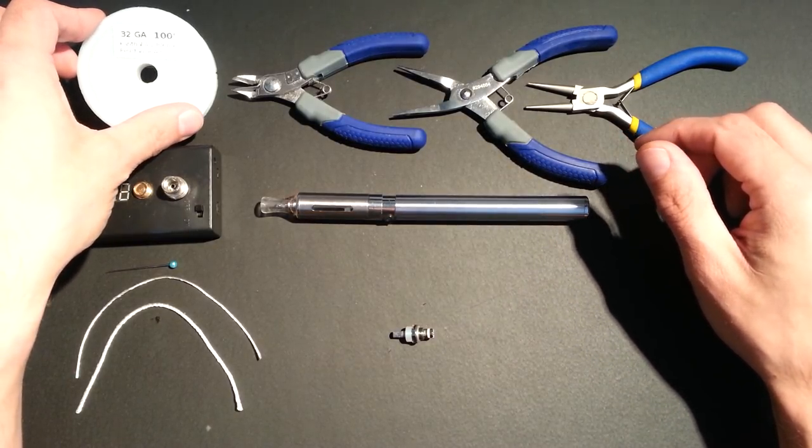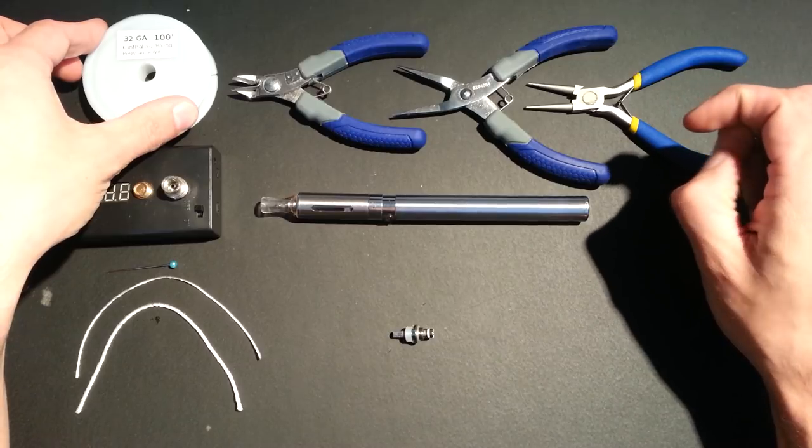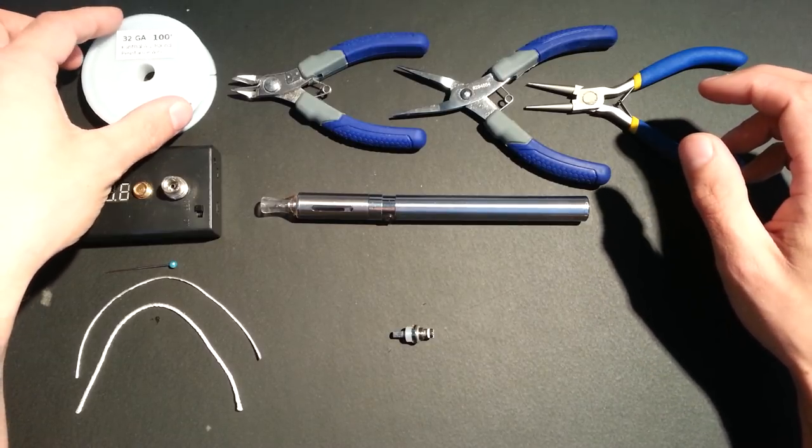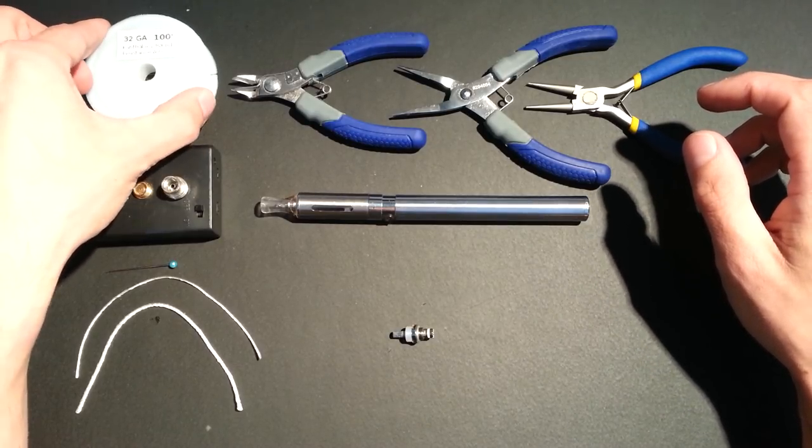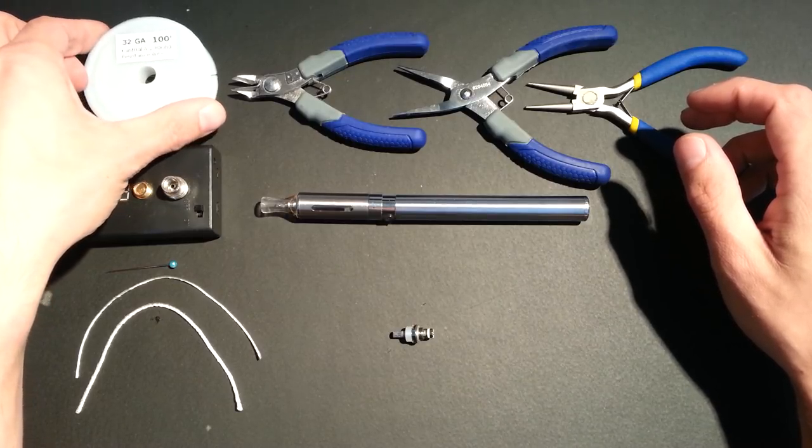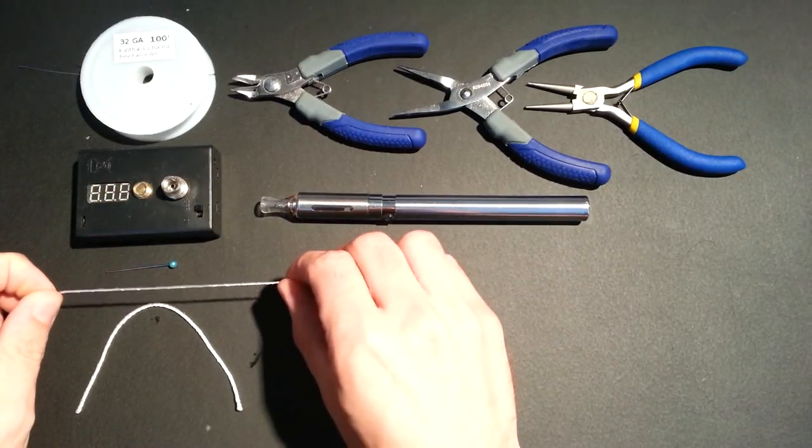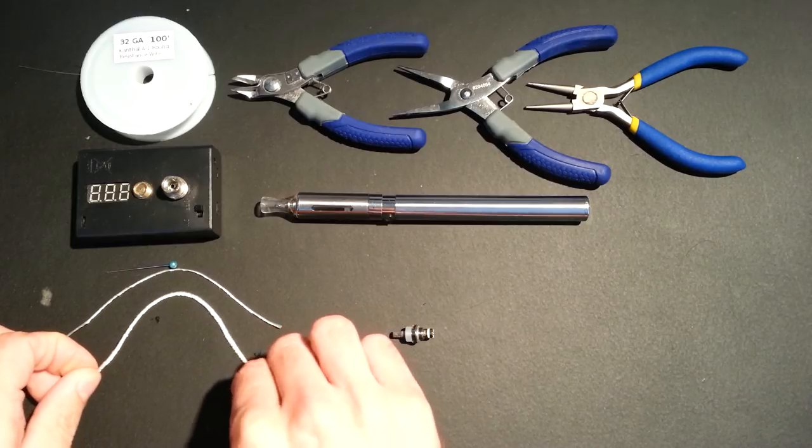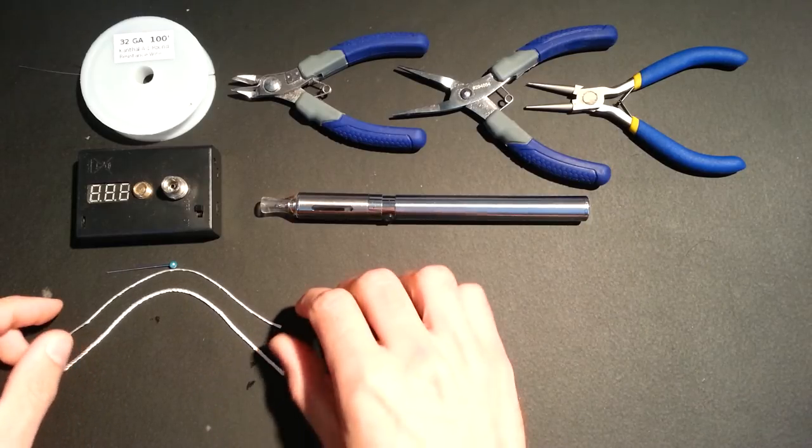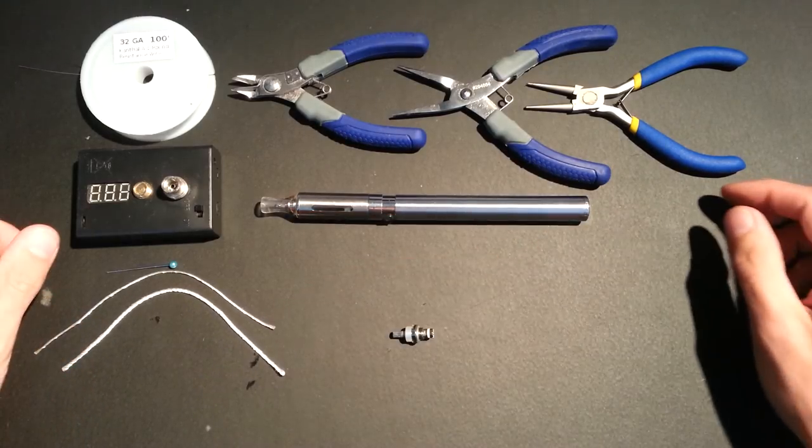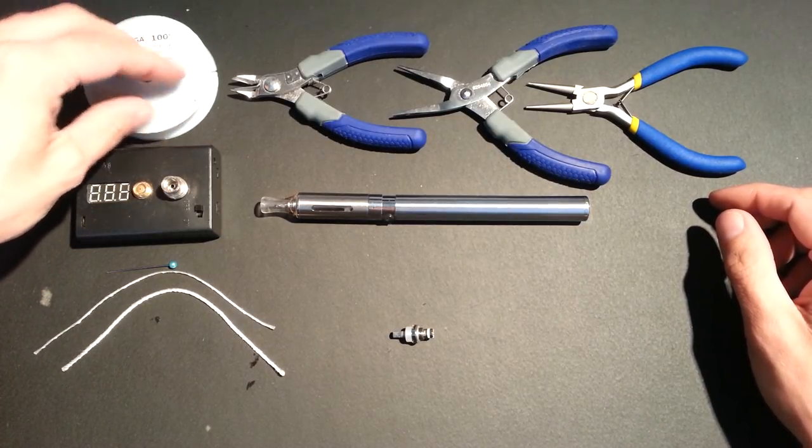Today I'm going to be using some 32-gauge Kanthal A1 round wire. I have this on my eBay store as well as Amazon, as well as the 1mm silica wick and the 2mm silica wick that we're going to be using today. Check out the links in the description for that. Best prices around.